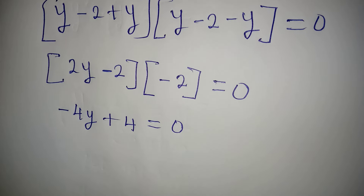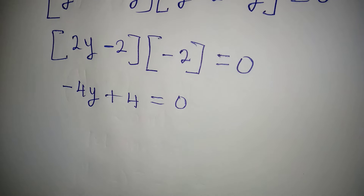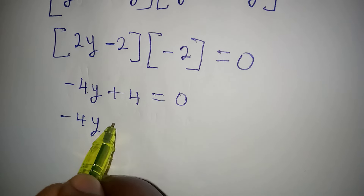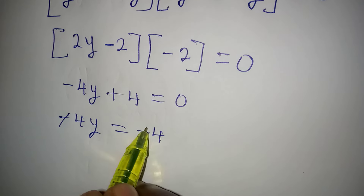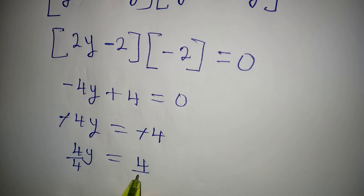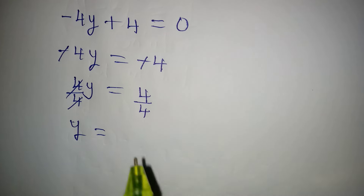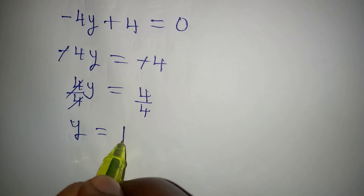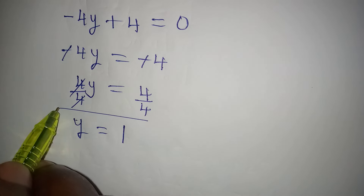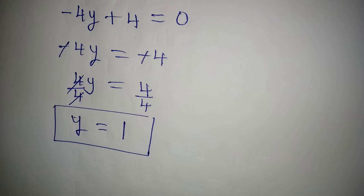You can see that when using the first method we got something like this towards the end. So minus 4y equals minus 4; the 4s cancel to give 4y equals 4. Dividing both sides by 4, y equals 4 over 4, which is 1. Using the second method we also got y equal to 1.